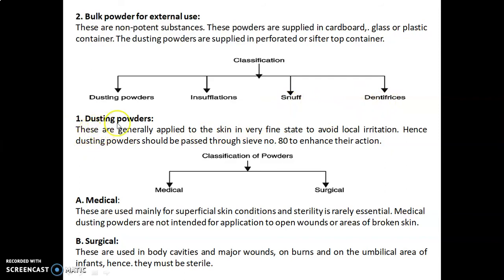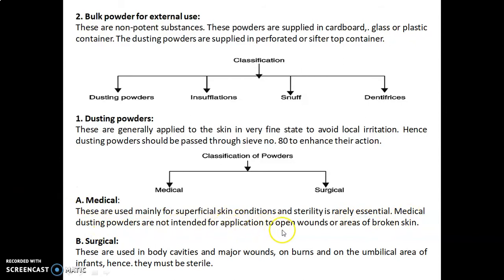Dusting powders are generally applied to the skin in a very fine state to avoid local irritation. Hence, dusting powders should be passed through sieve number 80 to enhance their action. Classification of dusting powder is medical and surgical. Medical dusting powders are used mainly for superficial skin conditions and sterility is rarely essential. They are not intended for application to open wounds or areas of broken skin. Surgical dusting powders are used in body cavities, major wounds, burns, and the umbilical area of infants, and hence they must be sterile.